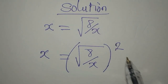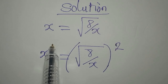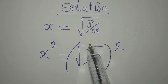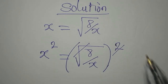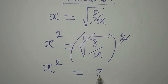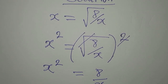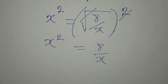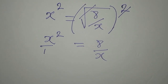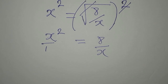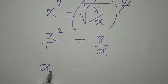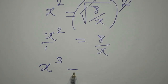If you square any side of an equation, you have to square the other side. The reason for squaring this side is to remove the square root. So now we have x squared equals 8 over x. We believe that x is also over 1, so we cross multiply — and you should know when to cross multiply.